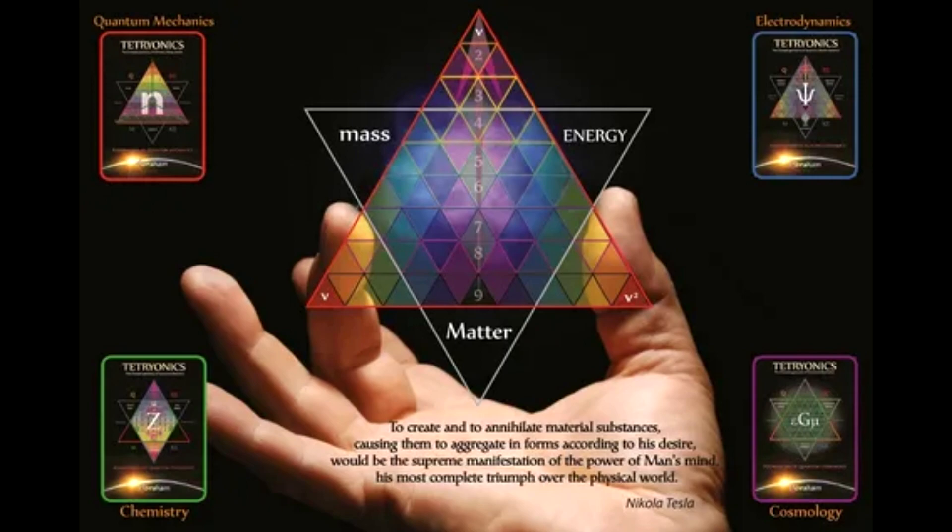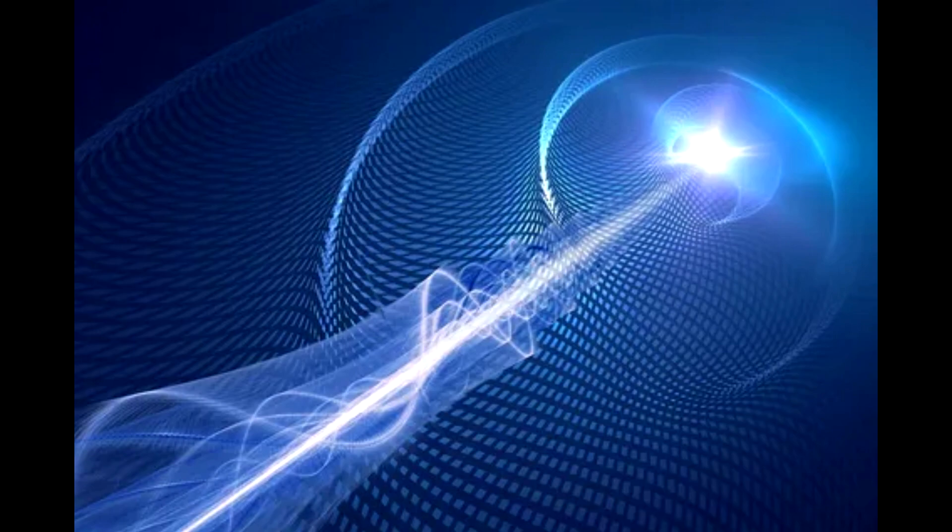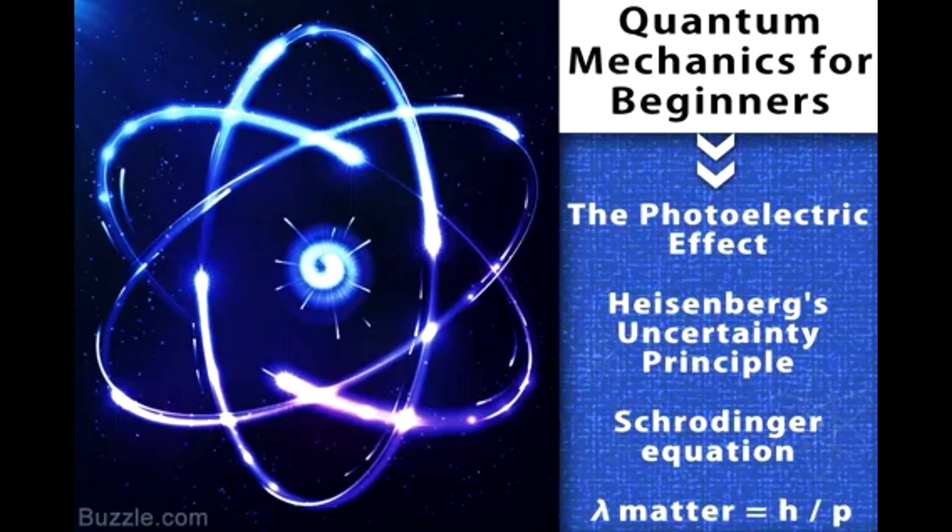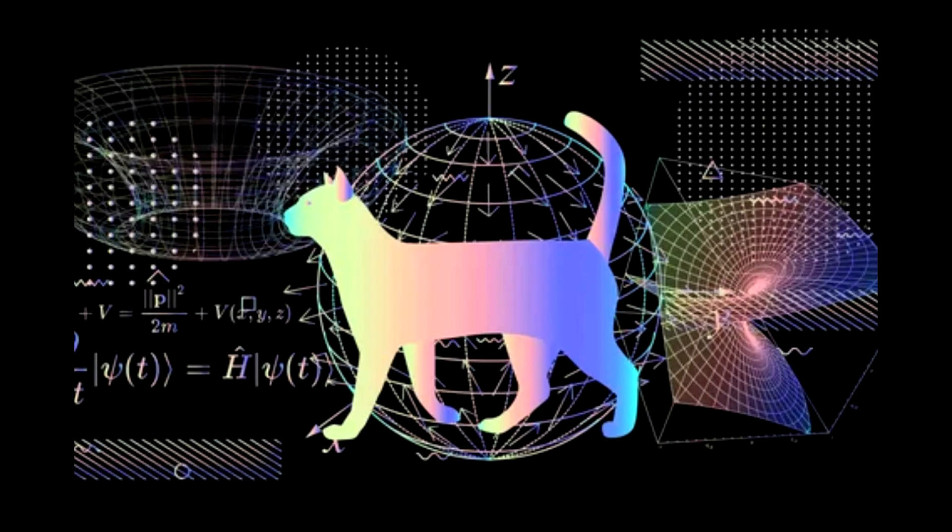In the 1910s, Danish physicist Niels Bohr tried to describe the internal structure of atoms using quantum mechanics. By this point, it was known that an atom was made of a heavy, dense, positively charged nucleus surrounded by a swarm of tiny, light, negatively charged electrons.